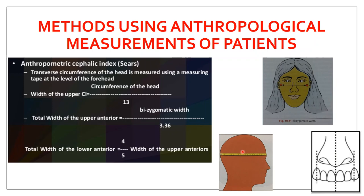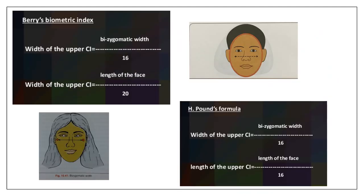Another anthropological method uses the width of the nose to select anterior tooth size. The third method is Berry's biometric index, which gives the width of the upper central incisor using two formulas: bizygomatic width ÷ 16, or length of the face ÷ 20. You measure the bizygomatic distance or face length, substitute the value, and divide accordingly to get the central incisor width.